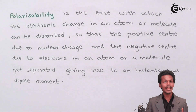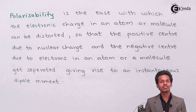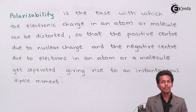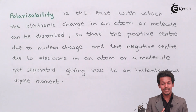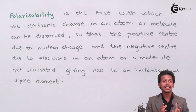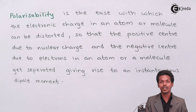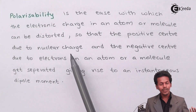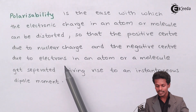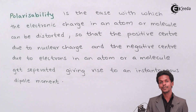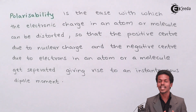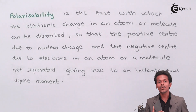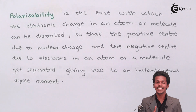Distorted in the sense of being separated. Suppose if an atom or molecule has positive charge and negative charge that are not being separated, polarizability means how easily those positive and negative charges can be separated. That process is known as polarizability, where we distort the charge distribution. The positive center due to the nuclear charge and the negative center due to the electrons in the atom or molecule will get separated, giving rise to an instantaneous dipole moment.